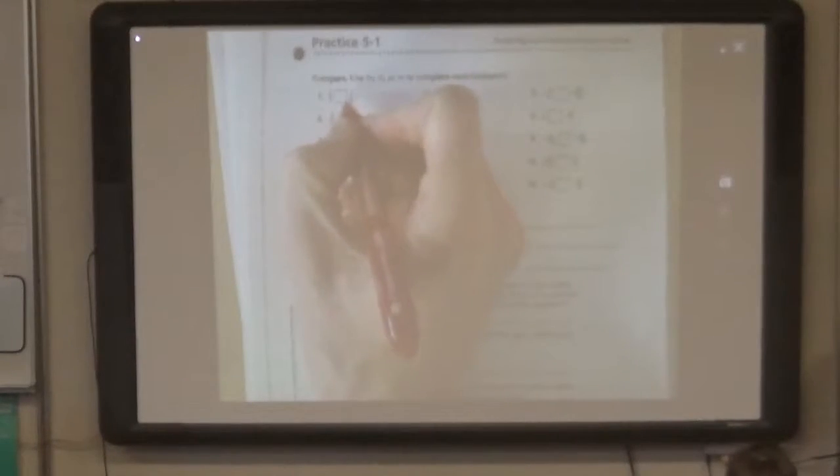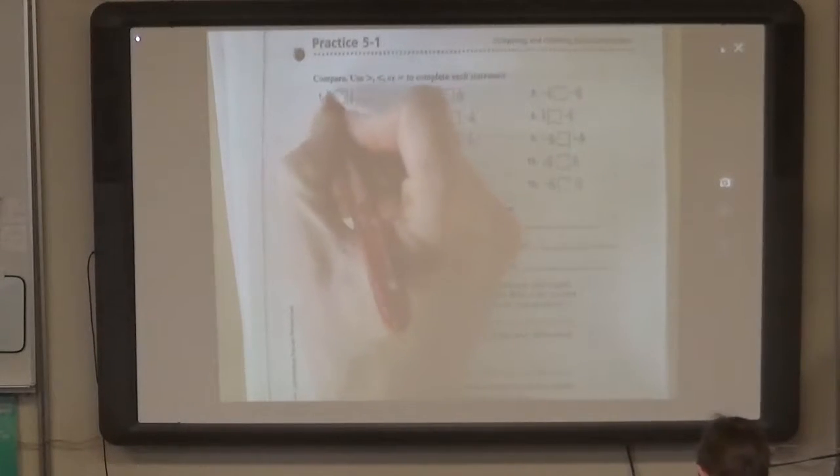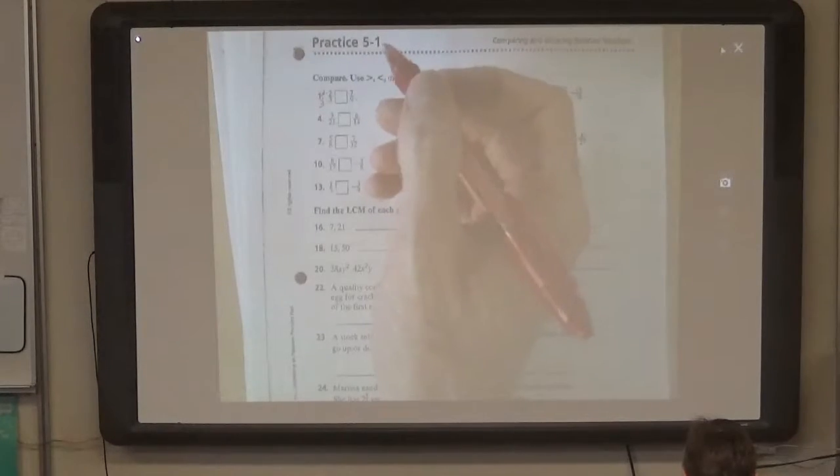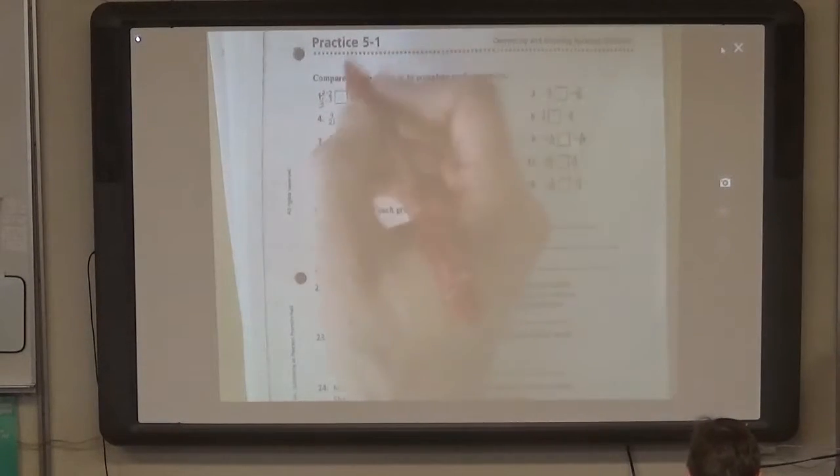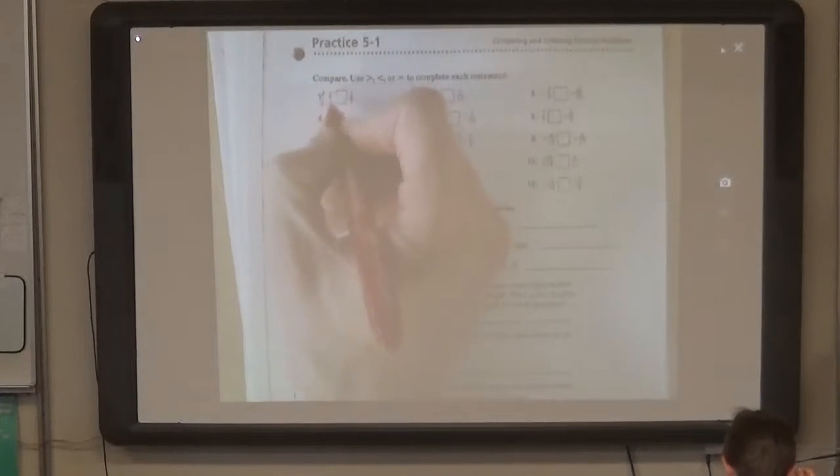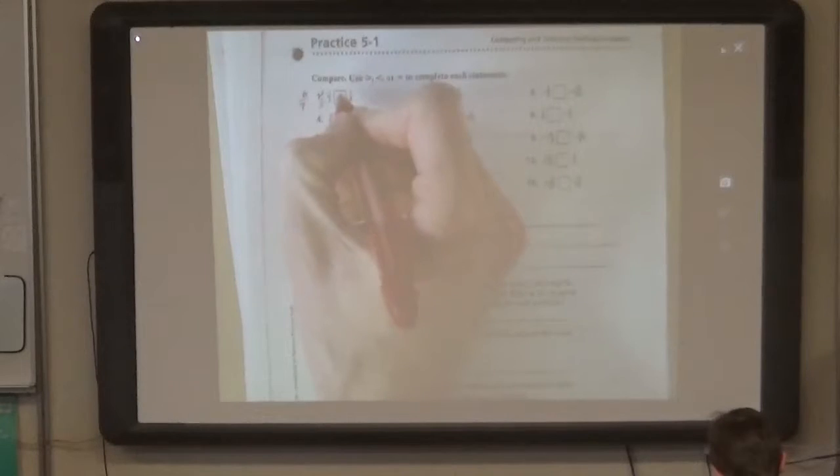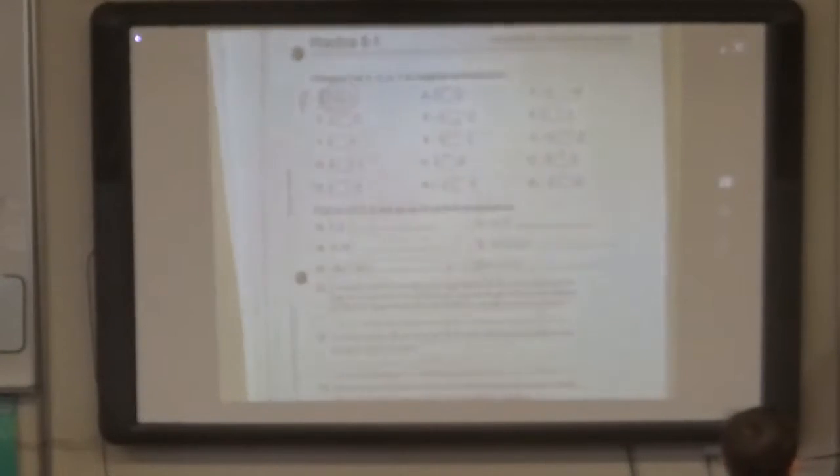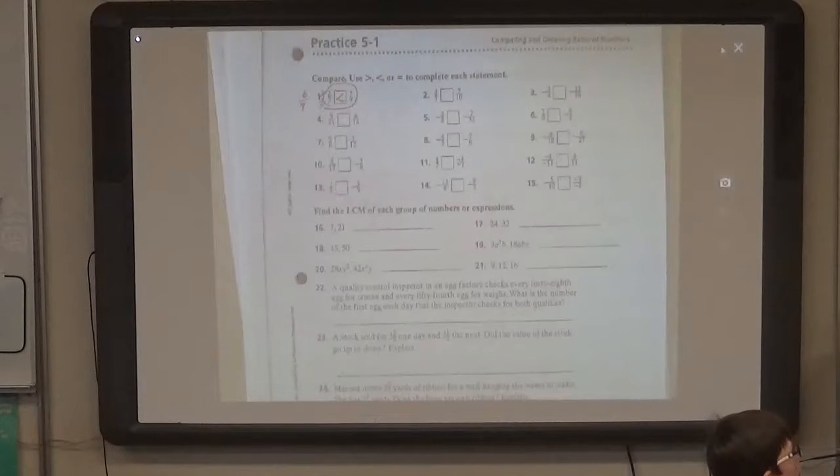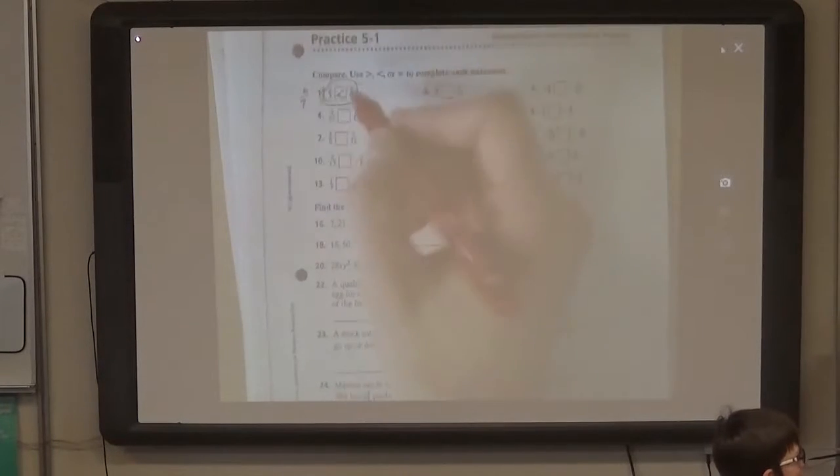Since 3 goes into 9, you can convert thirds to ninths by multiplying the top number and the bottom number by the same number. So, 2 thirds is 6 ninths, and that is less than, that was four.